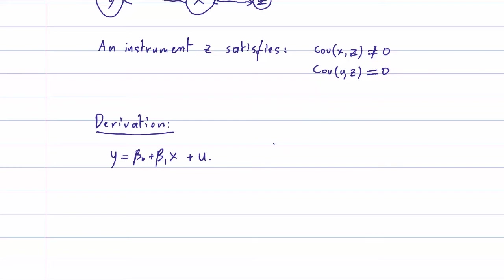And we have z such that the covariance between x and z is not zero, and the covariance between u and z is zero.